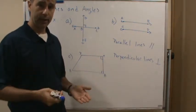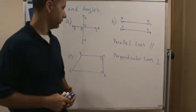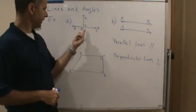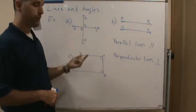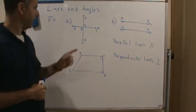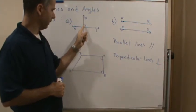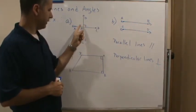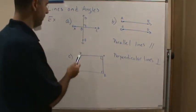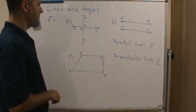So again, parallel lines are lines that never intersect, and perpendicular lines are lines that intersect at right angles. Looking at this example, we can see these are two perpendicular lines because they intersect and they create a right angle here.